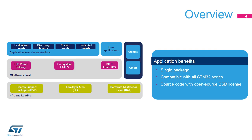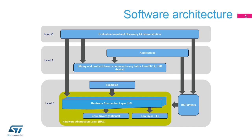Embedded software is delivered by series, such as STM32G4 and STM32L4, and common modules are covered with fully portable APIs. Embedded software initialization code can be generated through STM32CubeMX, allowing the customer to remain focused on the core application code.